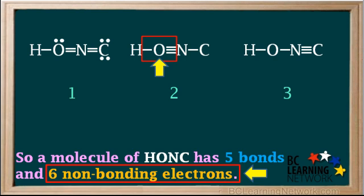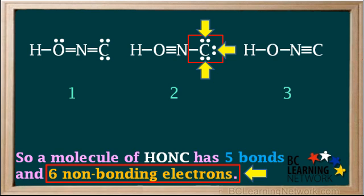In structure two, oxygen has four bonds, so it already has a stable octet. Likewise, nitrogen also has four bonds, so it has a stable octet. We add three lone pairs to the carbon atom. The combination of one bond and three lone pairs gives carbon a stable octet. This accounts for all six non-bonding electrons in structure two.